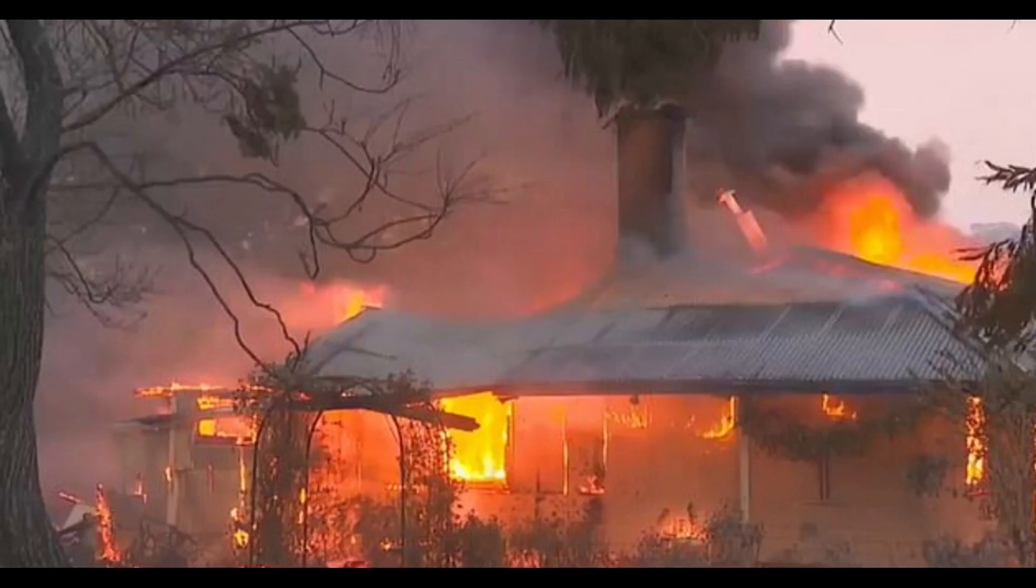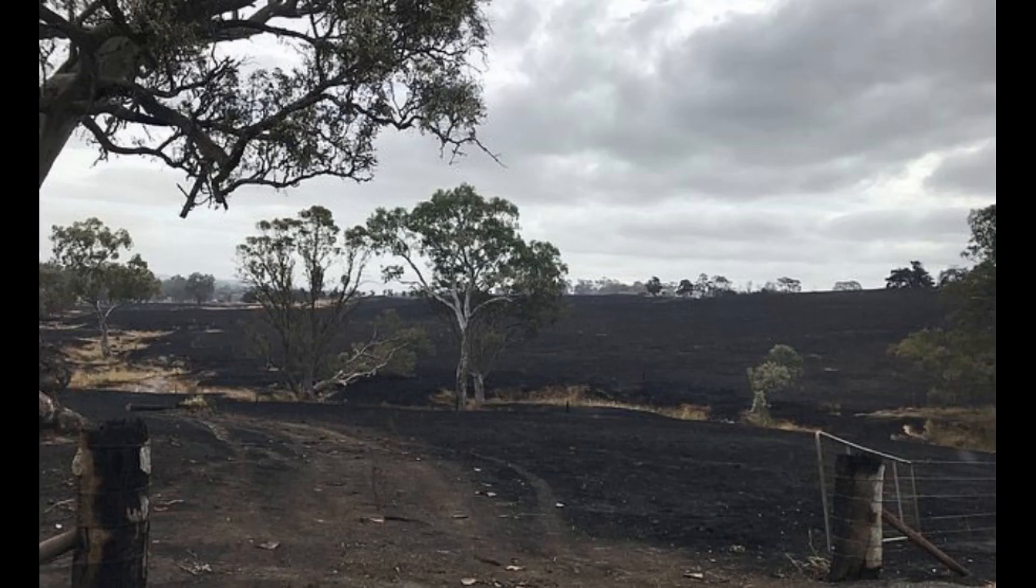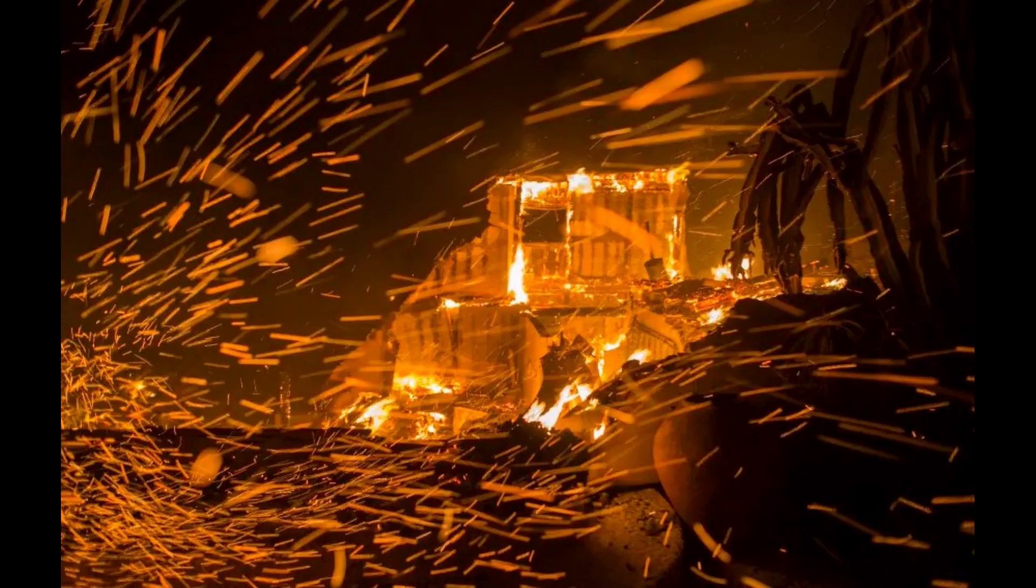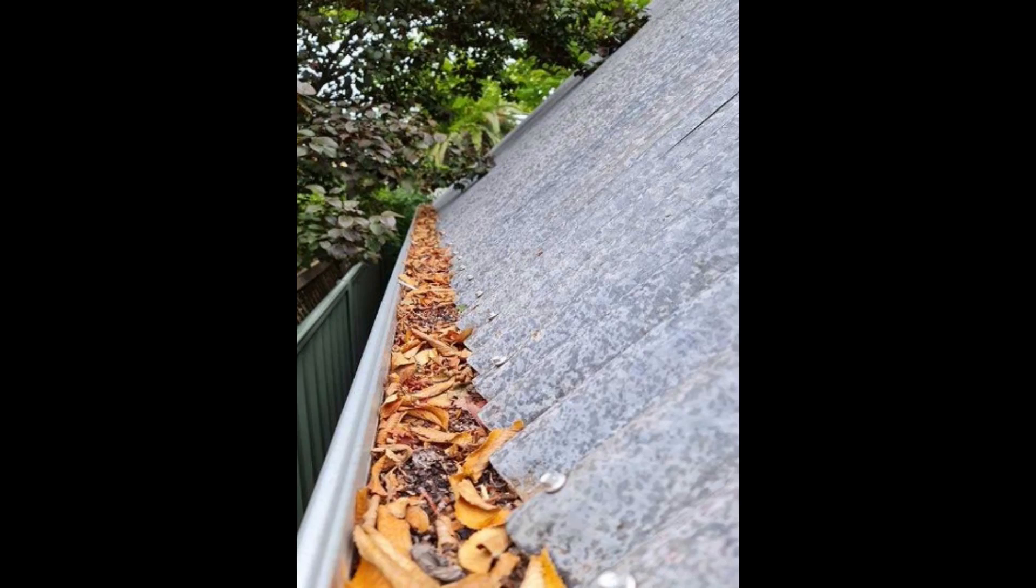One of the big problems in a bushfire is ember attack. So these embers go onto your roof, they roll down the roof into your gutters, and if you don't keep your gutters clean and they're full of leaves like this, you've simply created kindling for a bushfire and this fire will start pretty quickly if you get under ember attack.